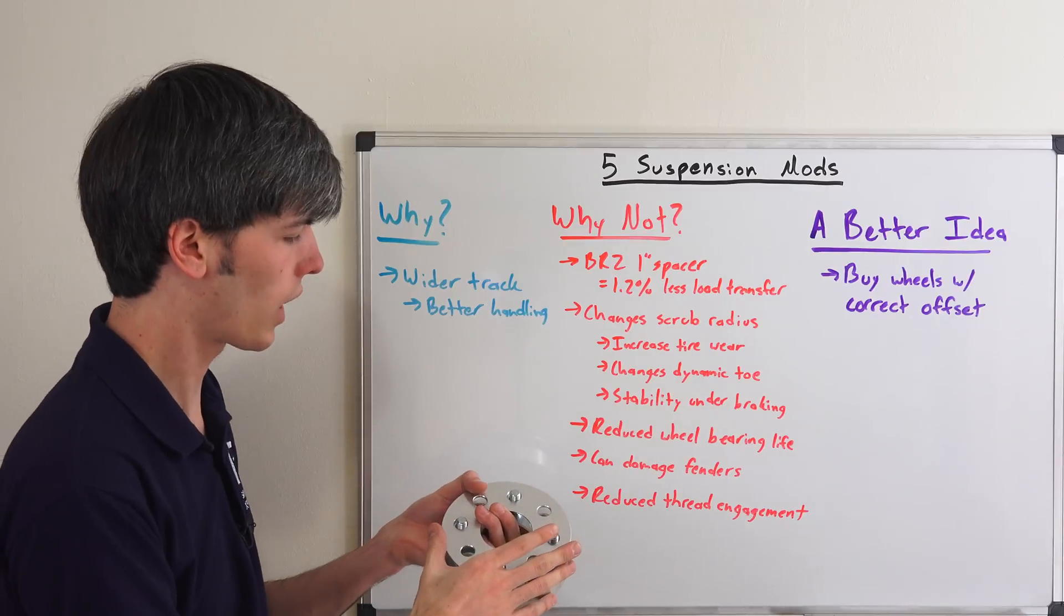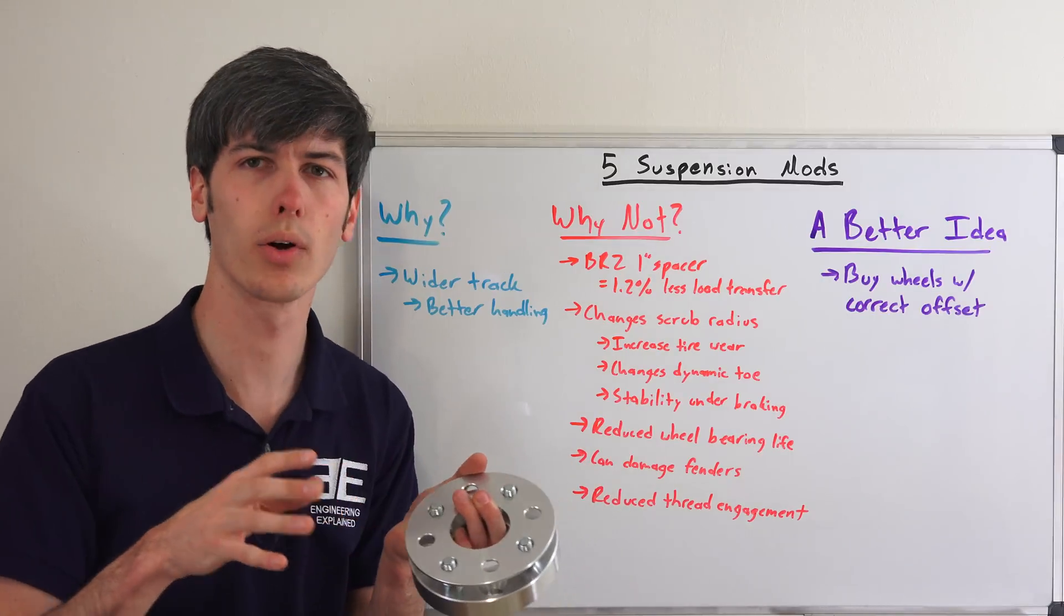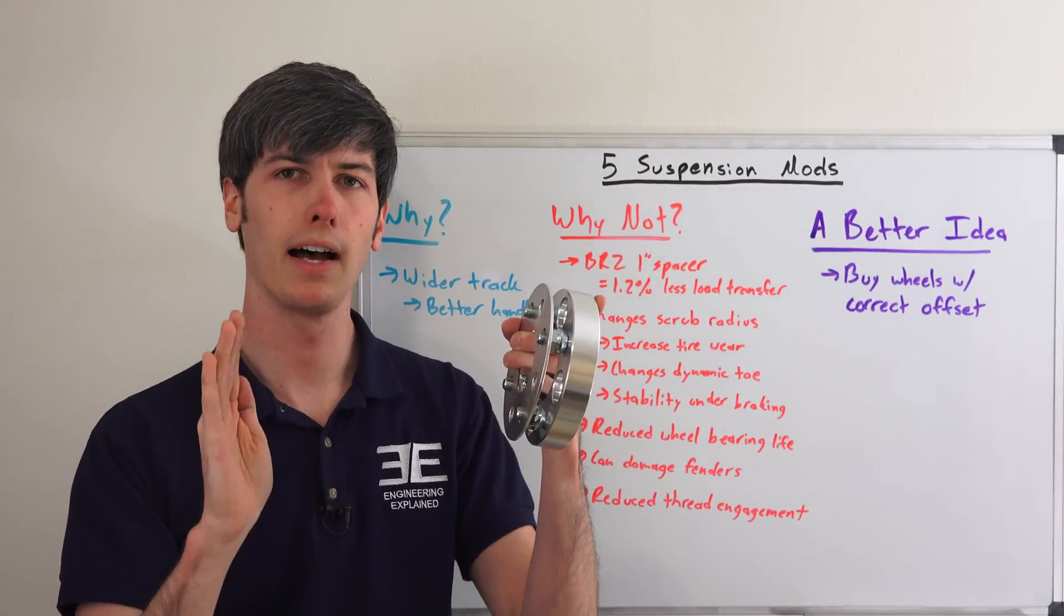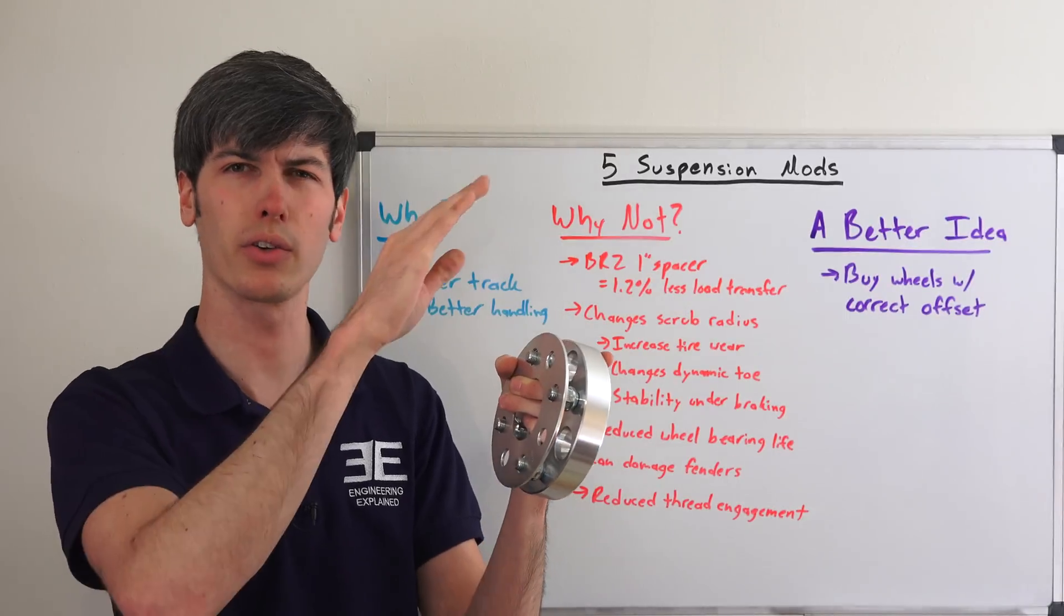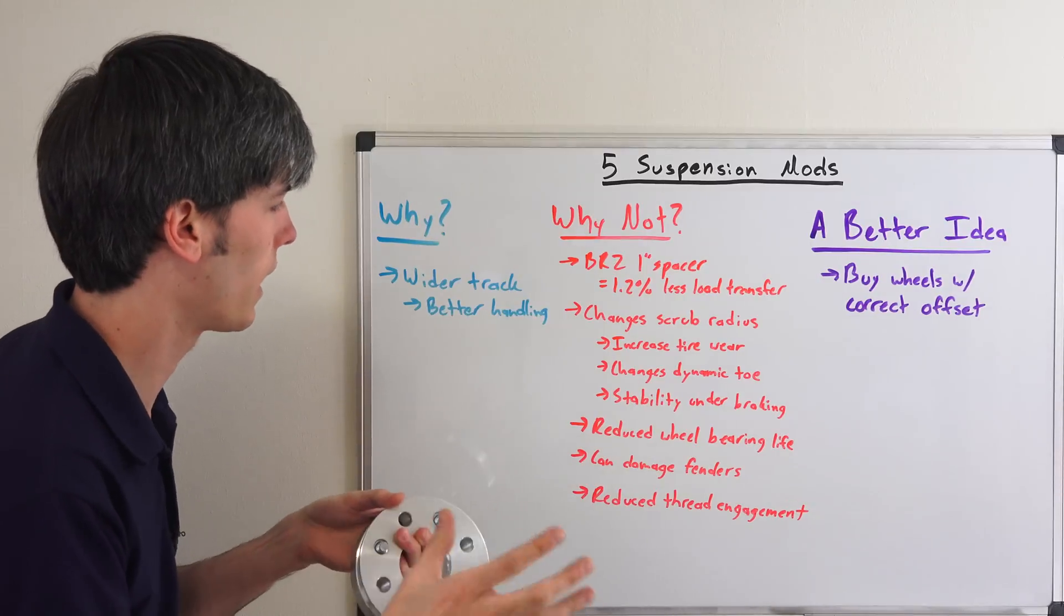Another thing which I haven't written up here is the fact that doing this will change your effective spring rate. Because you've pushed your wheel out, when you hit a bump, that wheel now has more leverage on your spring, and as a result you've reduced the effective spring rate at the wheel.